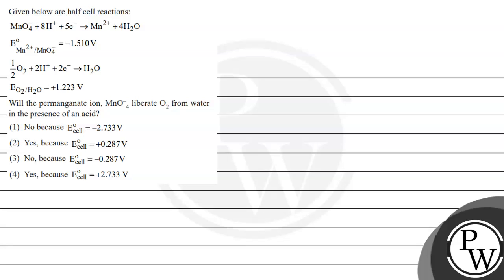Let's read this question. Given below are half-cell reactions with their respective electrode potentials. Will the permanganate ion MnO₄⁻ liberate O₂ from water in the presence of an acid? These are the following options given to us. Basically, this question asks us to determine spontaneity.